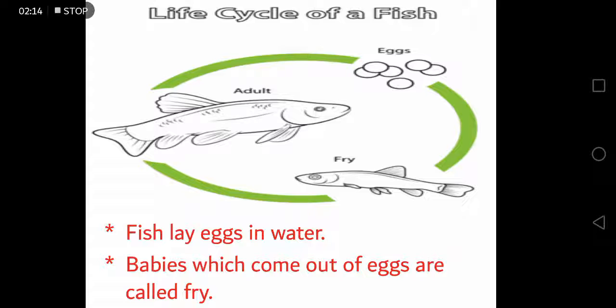So the first stage of the life cycle of fish is eggs, the second one is fry, and the third one is adult fish. This is how the life cycle of a fish continues.